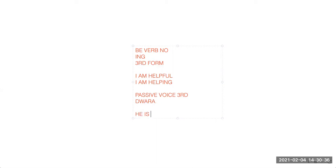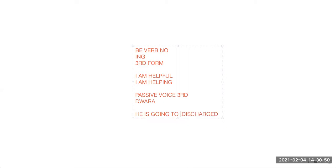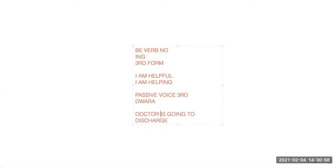For example: 'The patient is going to be discharged' — this is with the third form. If I remove the third form and put the first form, it becomes active: 'He is going to discharge,' meaning we are talking about the doctor. The doctor is going to discharge the patient.